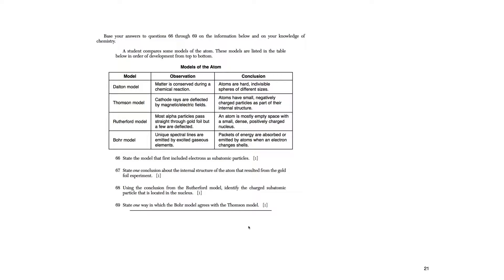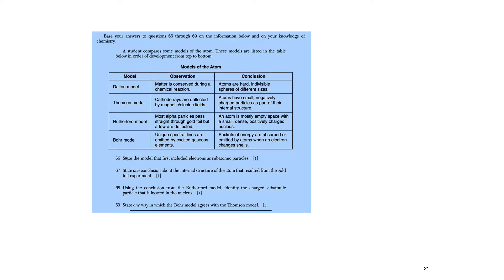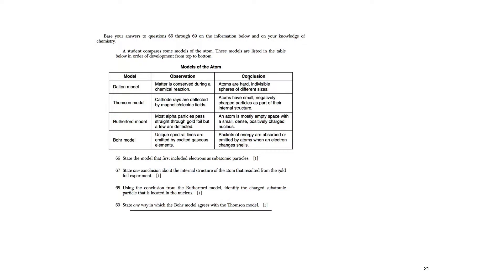State one way the Bohr model agrees with the Thompson model. Looking at the chart, both say atoms have small negatively charged particles as part of their internal structure — meaning they both agree on electrons. So question 66 — the model that first included electrons as subatomic particles — is Thompson, since it states 'atoms have small negatively charged particles as part of their internal structure.'